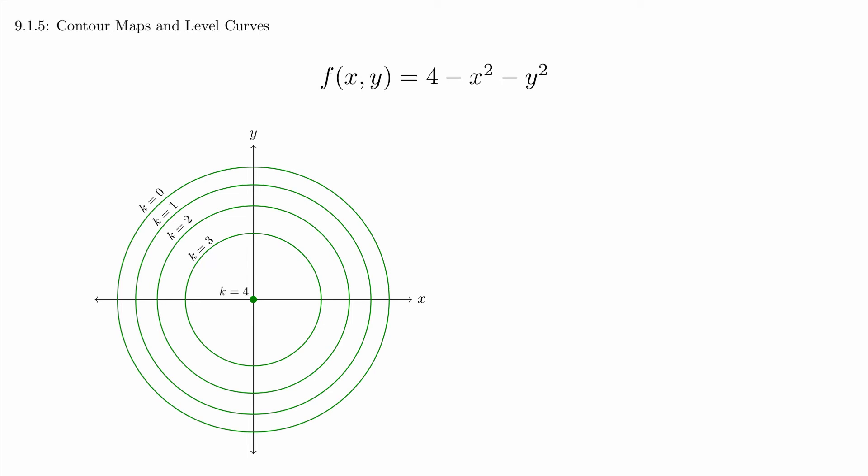we get a contour map. Notice that we've labeled the individual circles so that we can tell which is which.